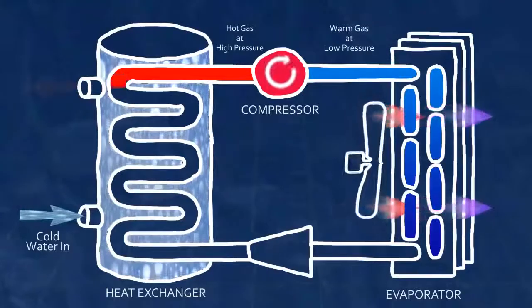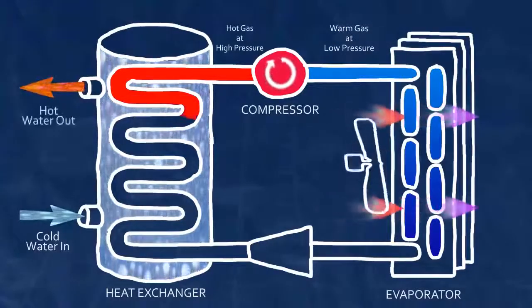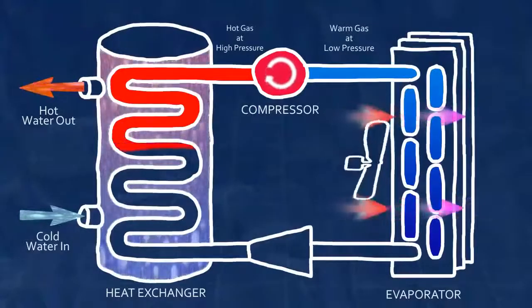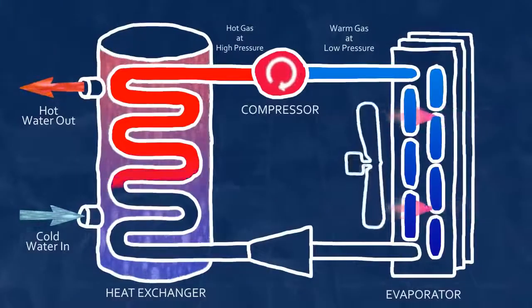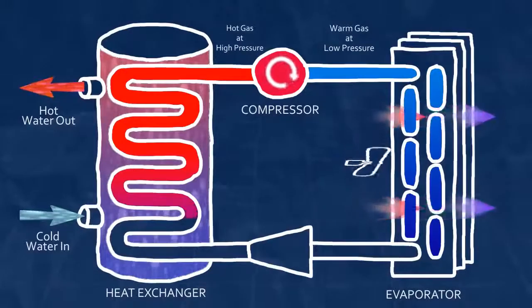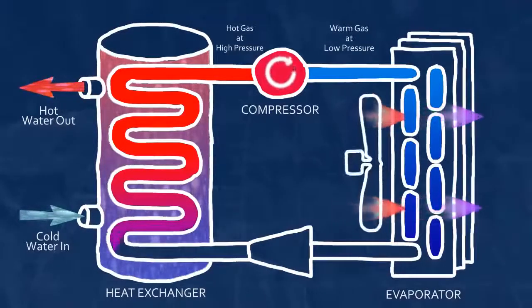The condenser is in contact with the water and the hot gas now gives up its heat to the colder water. As heat leaves the gas refrigerant, it cools off below its condensation point and changes from a gaseous state to a high pressure liquid state. The change from gas to liquid facilitates the large transfer of heat energy to the water.